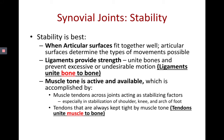Synovial joint stability does depend on all three components. Stability is best when the articular surfaces fit together well, when ligaments are present and provide strength, and when muscle tone is present and active. Muscle tone is the slight contraction of muscle that pulls on tendons, stabilizing joints because tendons cross joints. Tendons attach muscle to bone, whereas ligaments attach bone to bone.